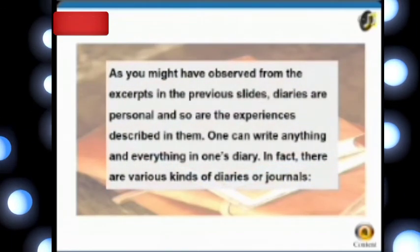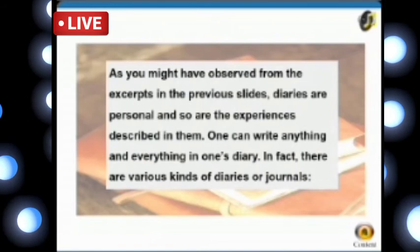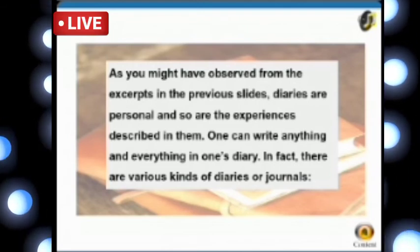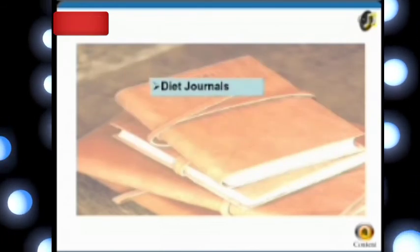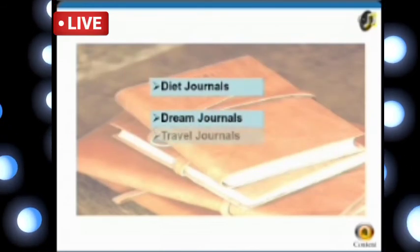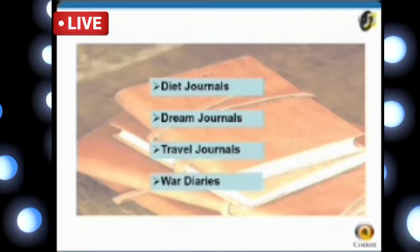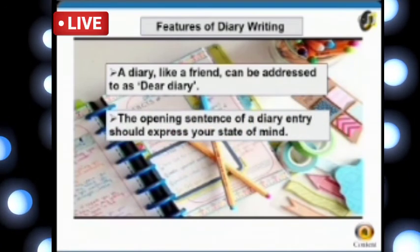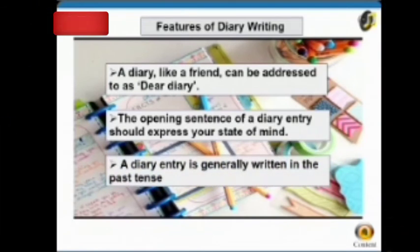As you might have observed from the excerpts, diaries are personal and so are the experiences described in them. One can write anything and everything in one's diary. There are various kinds of diaries or journals — diet journals, dream journals, travel journals, war diaries, and more. A diary, like a friend, can be addressed as 'Dear Diary.' The opening sentence of a diary entry should express your state of mind, and a diary entry is generally written in the past tense.